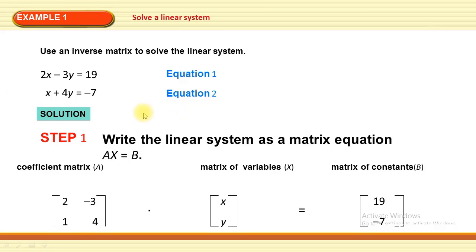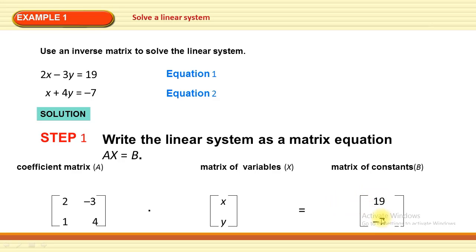In the first step, write the given system in matrix form Ax = B. The coefficients of variables in this system are 2, -3, 1, and 4. So A represents the coefficient matrix, capital X represents the matrix of variables x and y which are unknown, and matrix B = [19; -7] represents the matrix of constants on the right-hand side.